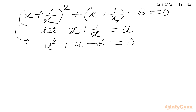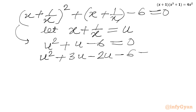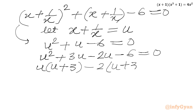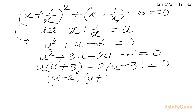The equation is quadratic. We can use the factorization method. So u² + 3u - 2u - 6 = 0. From the first two terms, u is common, giving u(u + 3). From the last two terms, -2 is common, giving -2(u + 3) = 0. So we can factor the left hand side as (u - 2)(u + 3) = 0. Therefore u = 2 or u = -3.